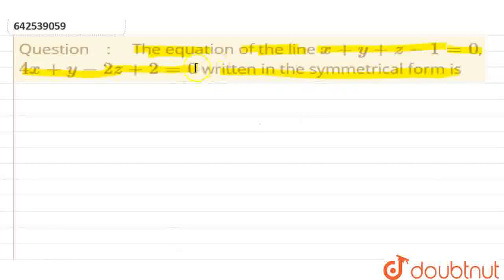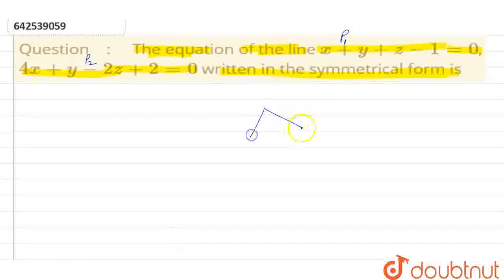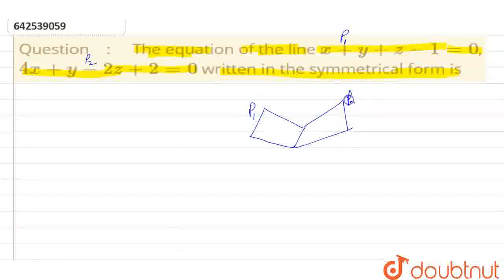So we need to write the equation of a line. Separately, this first equation will represent a plane P1, and this second will represent a plane P2. So simultaneously these two plane equations are given, and together they will represent a line P1P2 — that is, the collection of all points x, y, z that lie on both the planes. So obviously we will get a line.